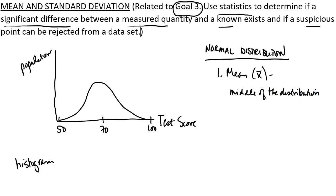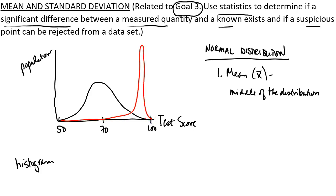Now let's say that first distribution is from spring of 2018. Imagine a new population — fall of 2019 — takes the same test, and their distribution looks something like this: not too many people failed, not too many got C's, a lot got A's and B's, and nobody got 100. It's still a bell-shaped curve, but the mean here would be much higher, maybe a 90.